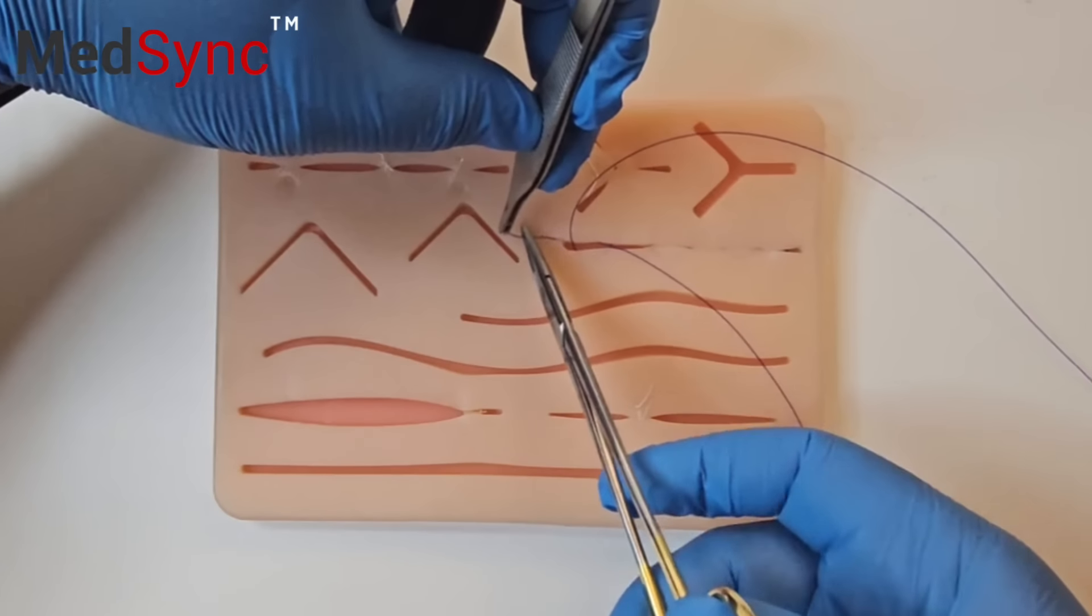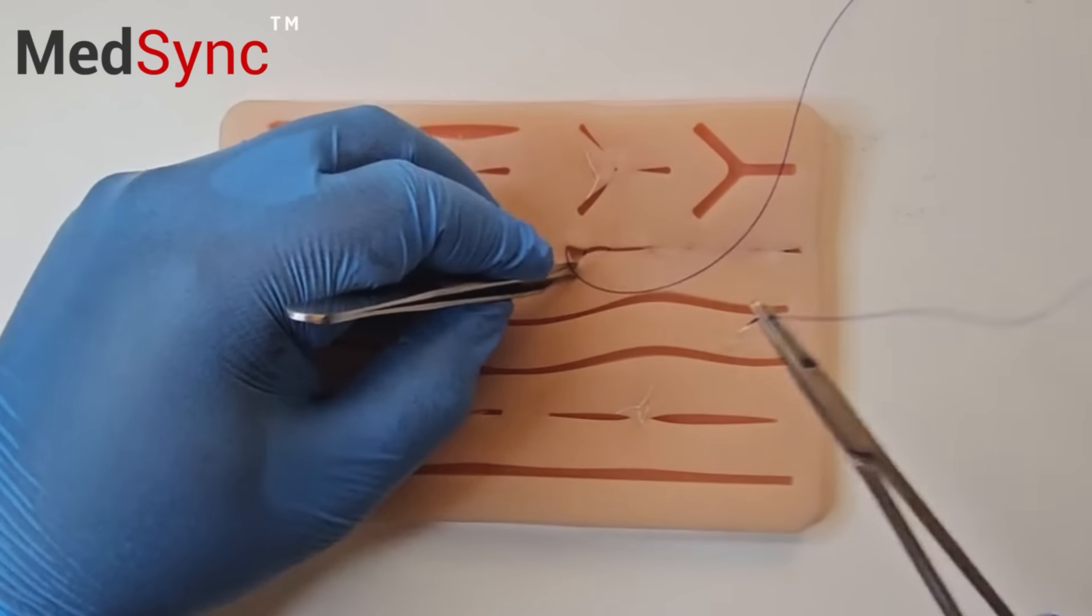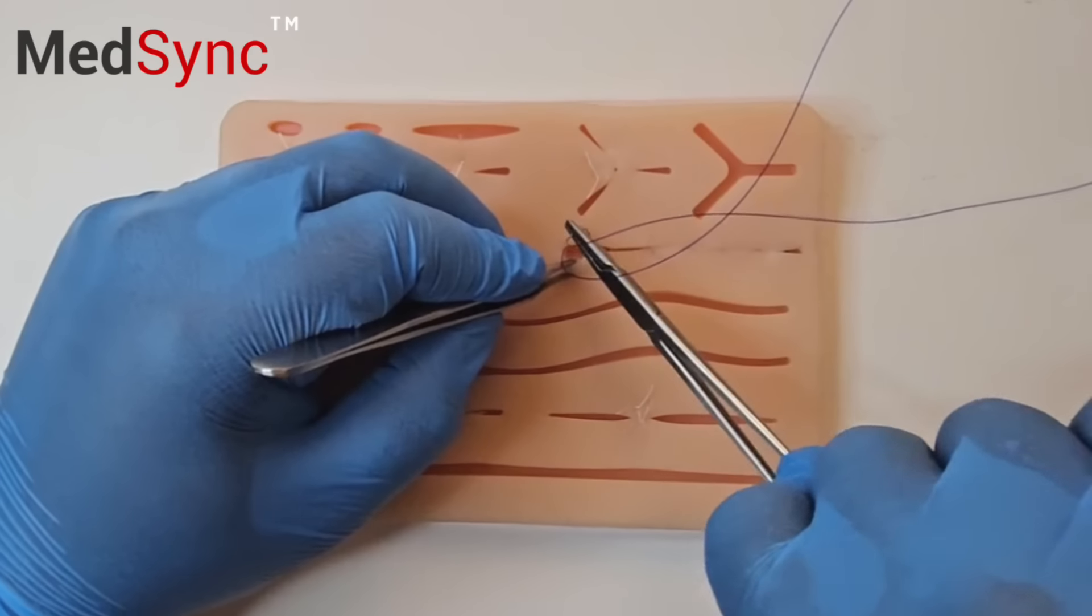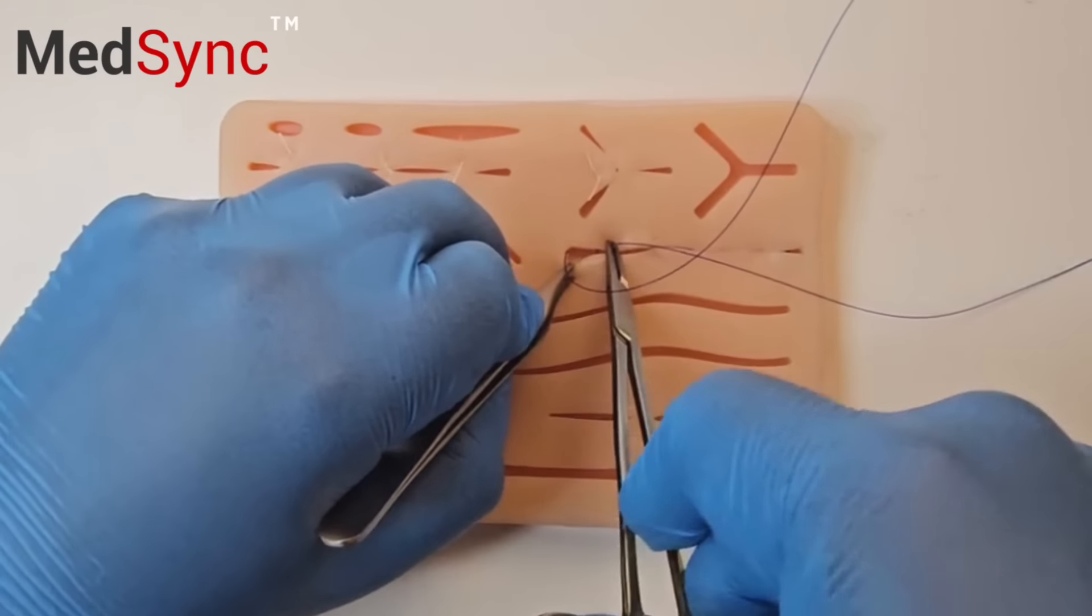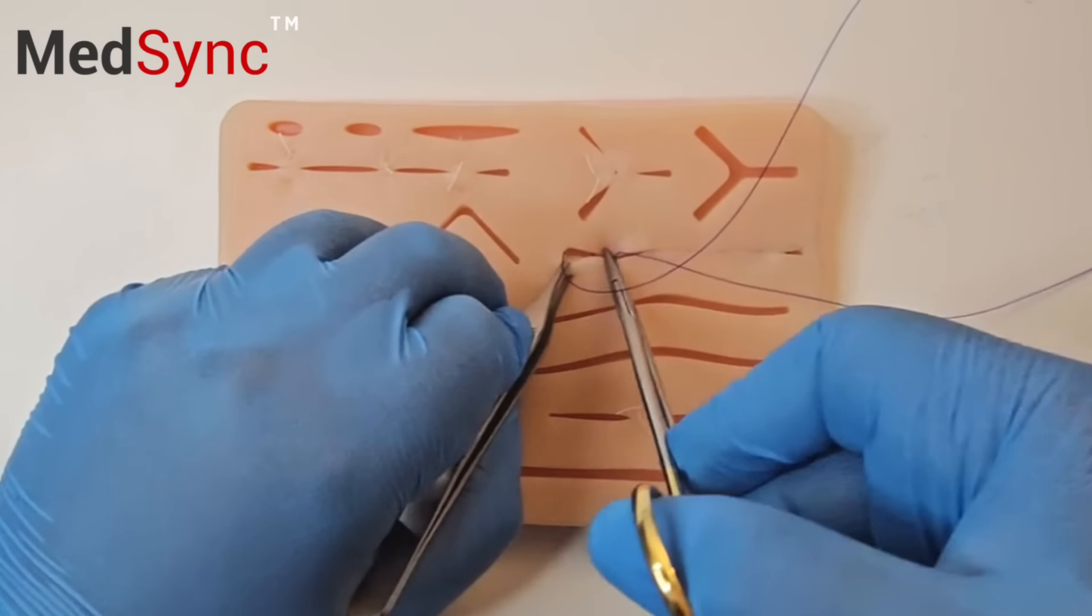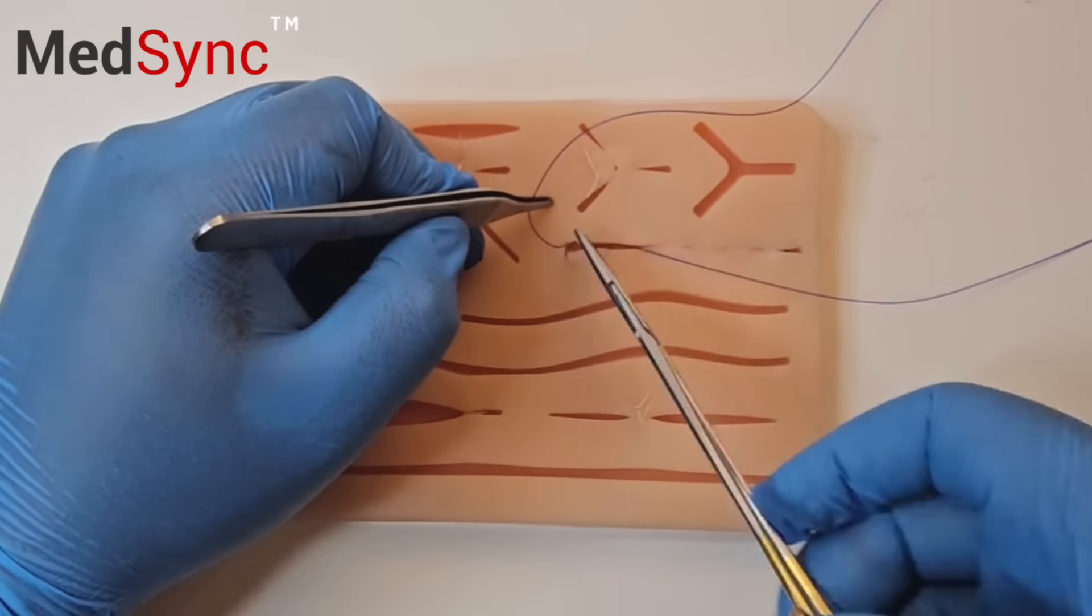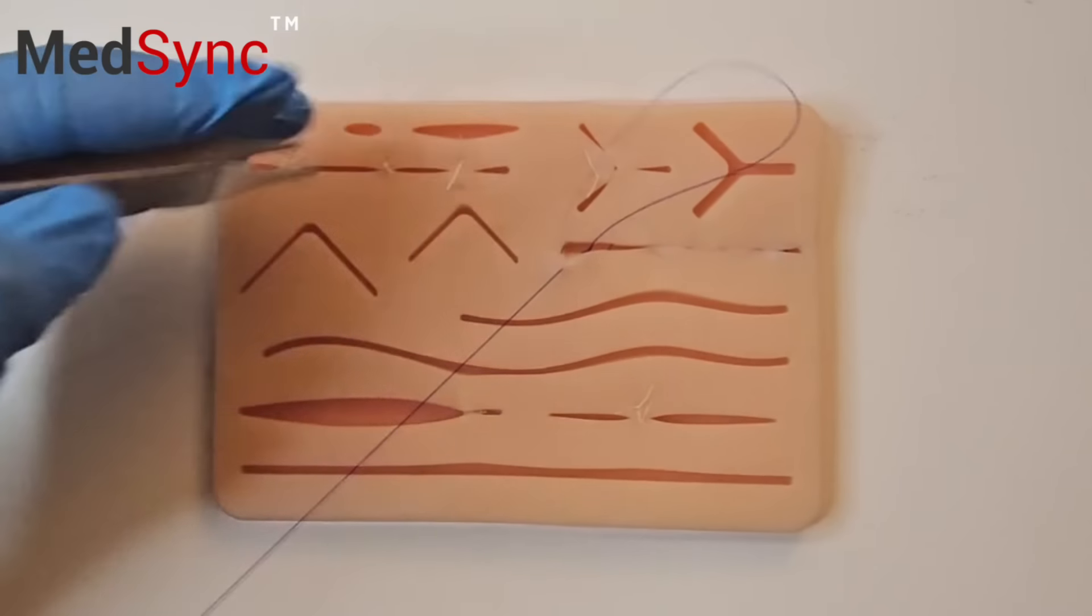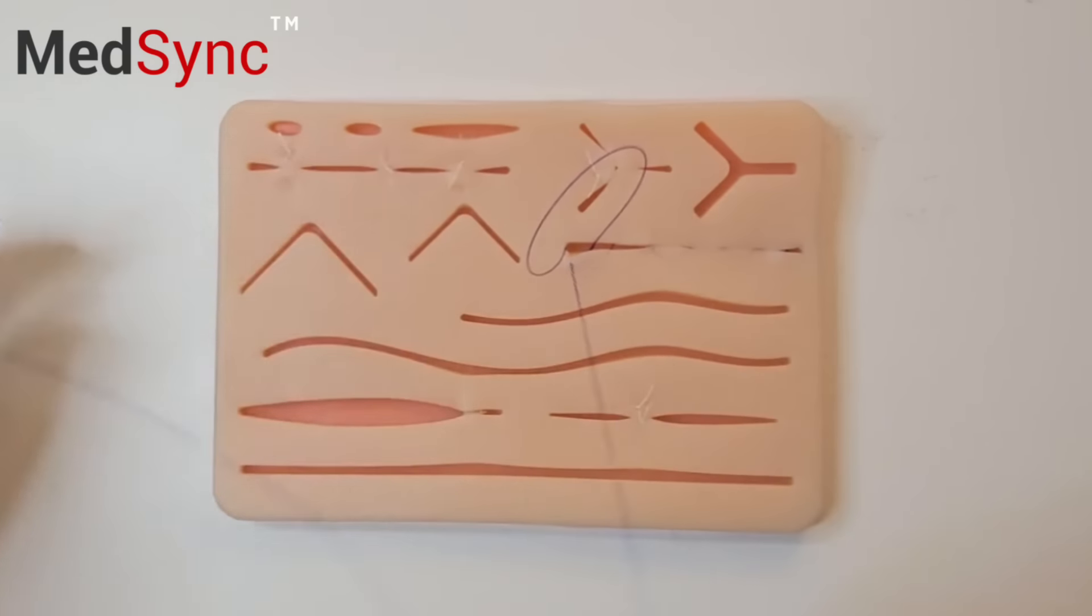You now need to anchor the knot on the other side. Take a bite deep. Create a loop and leave a long suture with the needle on the other side.